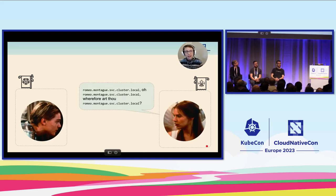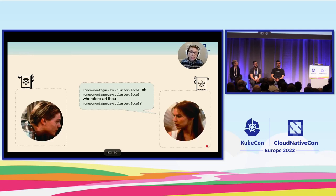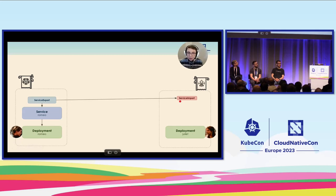Juliet's classic line becomes: romeo.montague.svc.cluster.local, wherefore art thou romeo.montague.svc.cluster.local. We need to get Romeo a way to respond to requests at her cluster instead of being isolated in his cluster. With the MCS API, Romeo is a deployment local to the Montague cluster with a service in front of it. We can create a ServiceExport to export it to the Capulet cluster, and a ServiceImport representing that Romeo service will now appear in the Capulet cluster so the Juliet deployment there can interact with it.